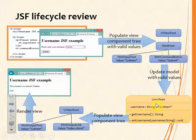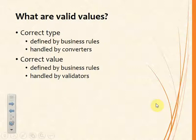Valid values means two things. First, the value must be of the correct type — if you're asking for an integer, a string is no good. Second, it must satisfy the business rules — for example, an age for a driving licence holder must be greater than or equal to 17. Validators determine validity of data, while converters ensure the correct data type.